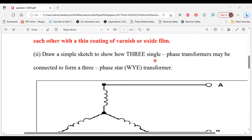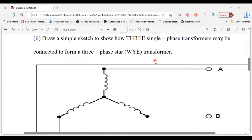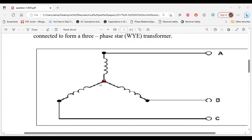So let's move on to part two. It says draw a simple sketch to show how three single phase transformers may be connected to form a three phase star transformer. All right, so each of the coils here, so we have one, two, three—by themselves they are single phase transformers.